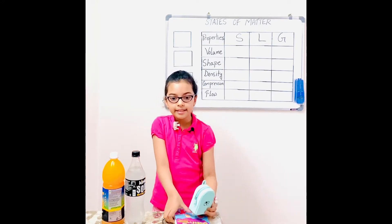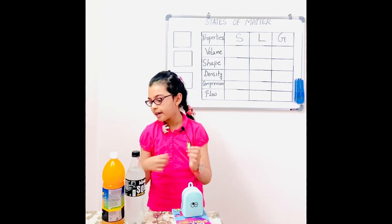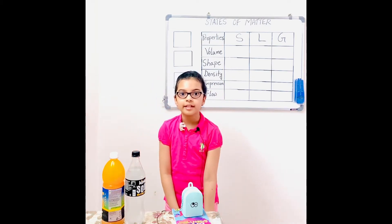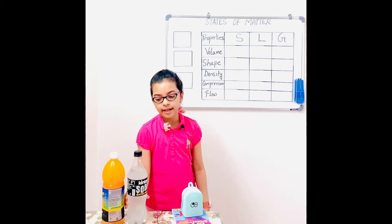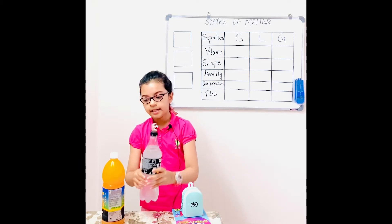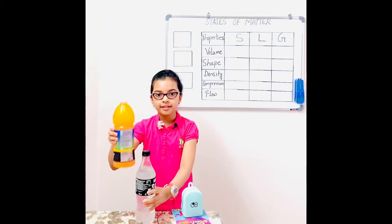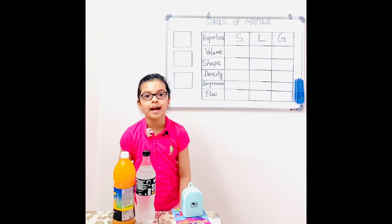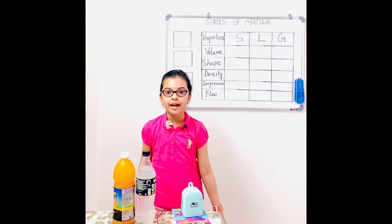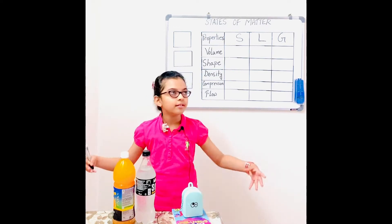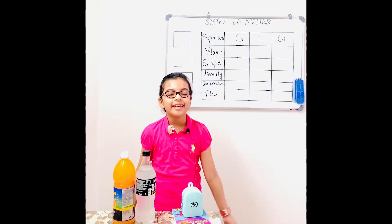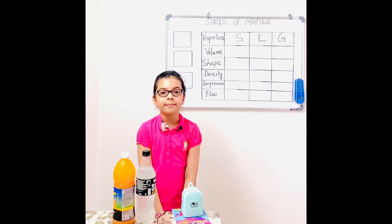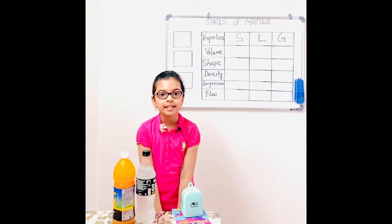For example, the silicon case is solid, this book, my watch, the marker, the board — most things around us are solid. Now coming to liquid: this soda is liquid, this orange juice is liquid, and even water is liquid. And for gas — you cannot see gas, but you can breathe it. Not gas really, but oxygen, and that's a type of gas.